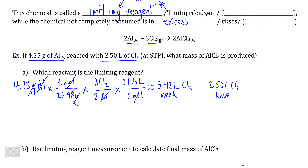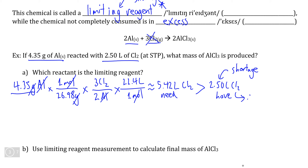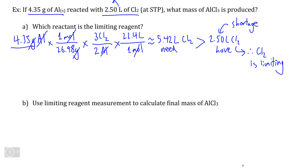Comparing this to the 2.50 liters of chlorine gas that we have, what we need is clearly greater than what we have. We have a clear shortage, which means this volume of chlorine gas is not enough to react with this mass of aluminum completely — chlorine is going to be gone first. Therefore, we can conclude that Cl2 is the limiting reagent, and we need to use our measurement of chlorine to do the final calculation.